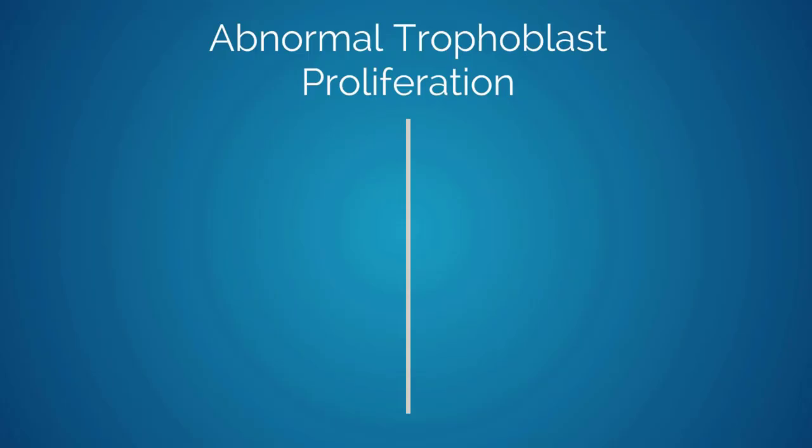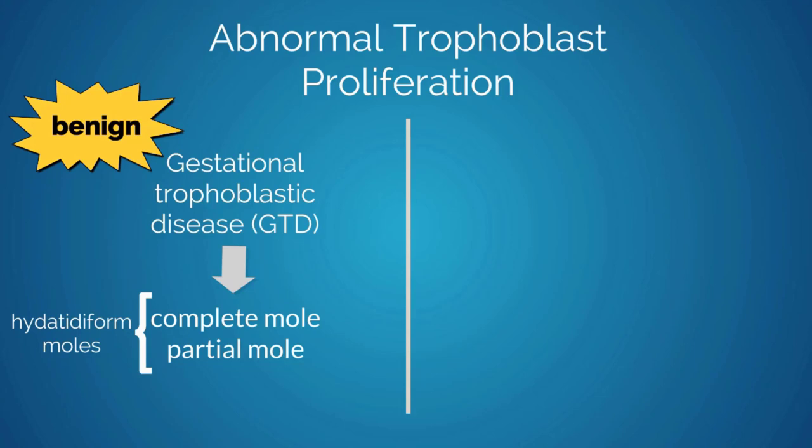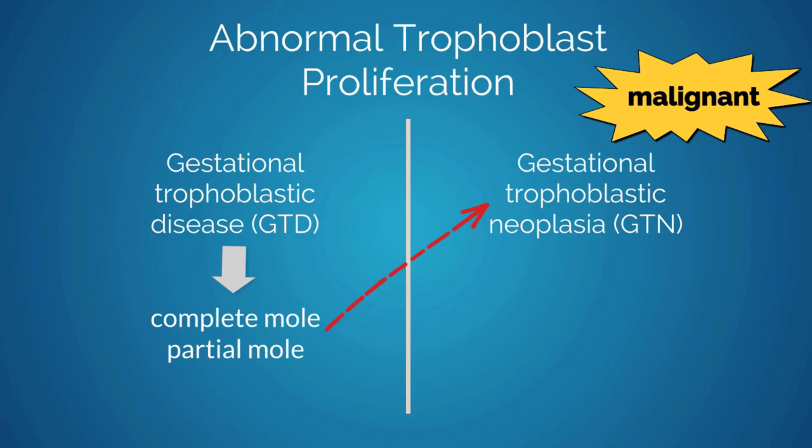Gestational trophoblastic disease is a group of benign disorders with abnormal trophoblast proliferation from the placenta. Lesions arise from fetal tissue rather than maternal tissue. This includes molar pregnancies, also known as hydatidiform moles, both complete and partial, as well as benign non-neoplastic lesions including placental site nodules. Women with molar pregnancies are at risk of developing malignant disorders known as gestational trophoblastic neoplasia.